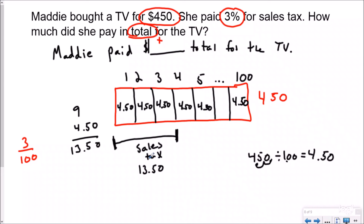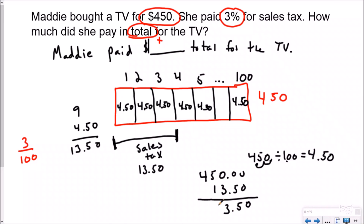Now the question did not ask for the sales tax — it asked how much did she pay total. So you would draw another part-whole tape diagram and add your $13.50 to your $450. When we add these together, we line our decimals up, which helps us line our place values up. All together, Maddie paid $463.50 — the $450 plus the 3% sales tax.